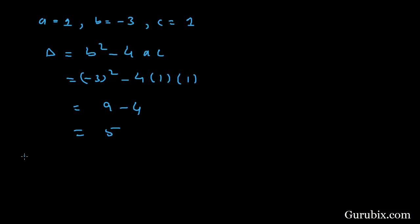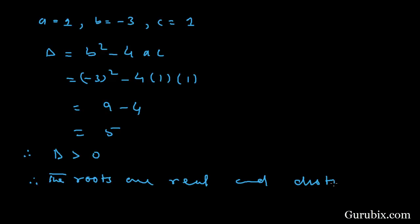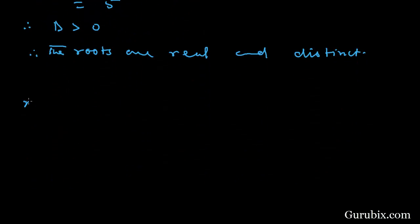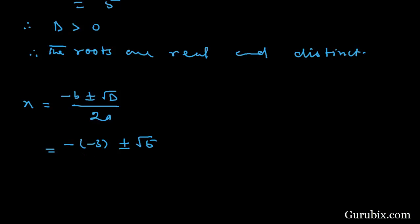Since D is greater than 0, the roots are real and distinct. Now we shall apply the quadratic formula: x equals minus b plus or minus square root of D over 2a. That is minus of minus 3, plus or minus square root of 5, over 2 times 1. This gives us 3 plus or minus square root of 5, all over 2. So these are the two roots of the quadratic equation.